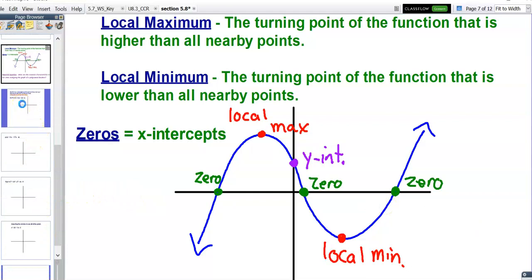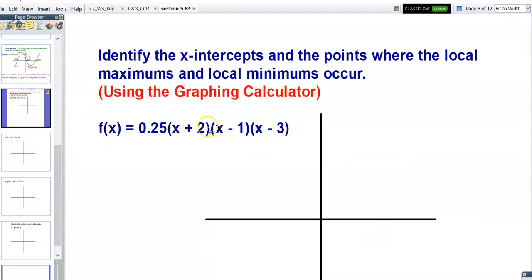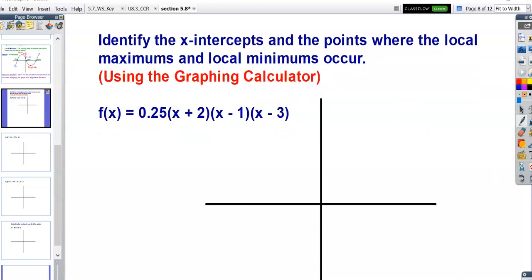Let's look at an example. Our job is to identify the x-intercepts and the points where the local maximum and local minimums occur. It says it right here in the question, use the graphing calculator. And yes, you need to use your graphing calculator for this question.